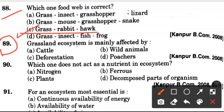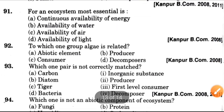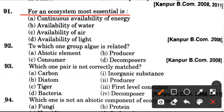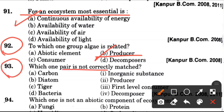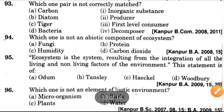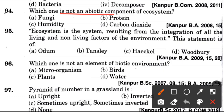Next question: Grassland ecosystem is mainly affected by? Answer is A, that is cattle. Ninetieth question: Which one does not act as a nutrient in ecosystem? Answer is B, which is ferrous. Now, ninety-first question: For an ecosystem, most essential is? Answer is A, which is continuous availability of energy. Now, to which one group is algae related? Answer is B, that is producer. Next question: Which one pair is not correctly matched? Answer is C, dead is tiger, which is kept in first-level consumer. Ninety-fourth question: Which one is not an abiotic component of ecosystem? Answer is A, dead is bonsai.